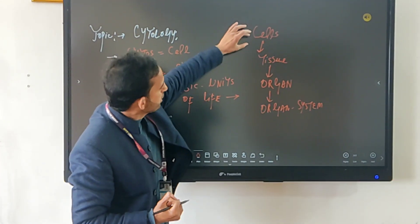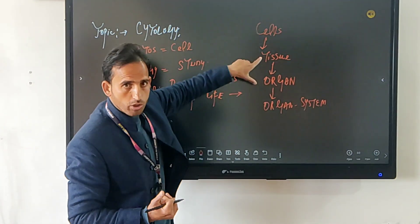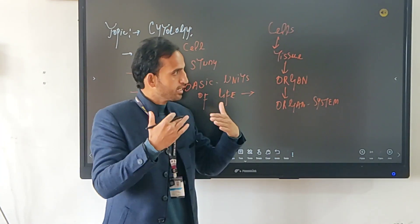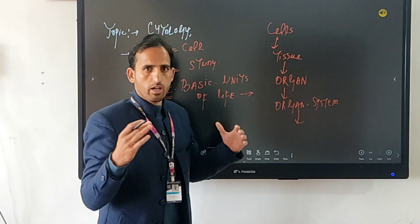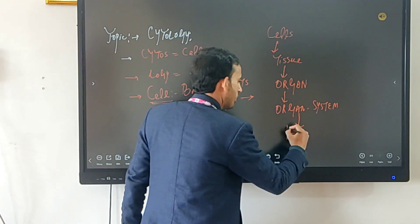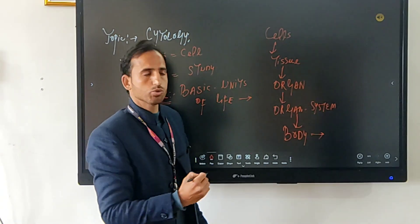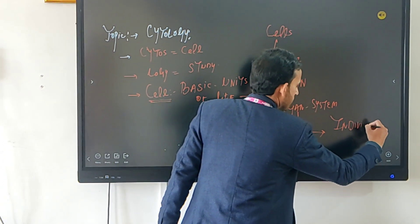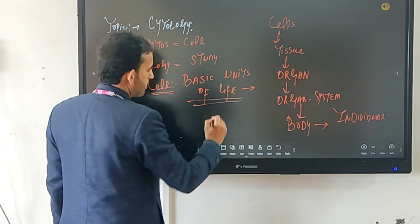So what I mean is that our body is made of cells. Cells get combined to form tissue. Tissues get combined to form organs. Organs get combined to form organ systems. And later on, organ systems get combined and they form the body of an organism. Once the body is formed, it means it will give rise to a particular individual. So that is why we say that cells are called basic units of life.